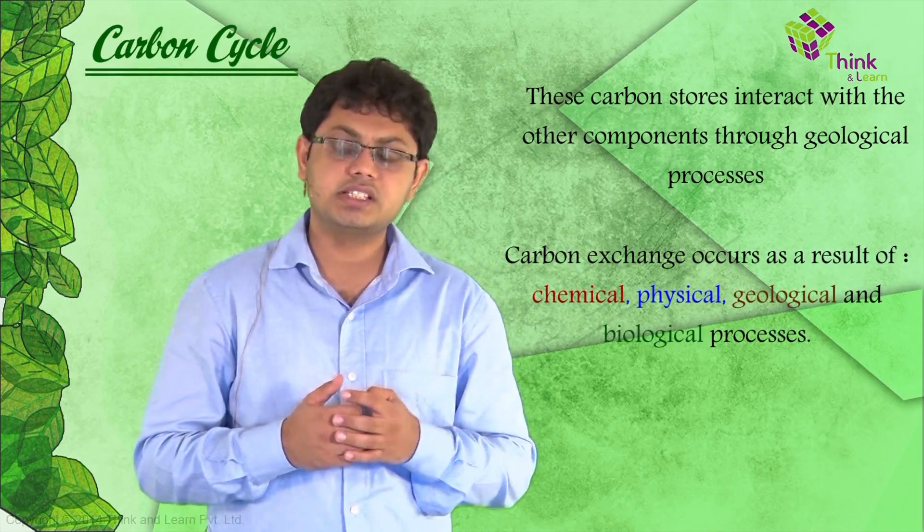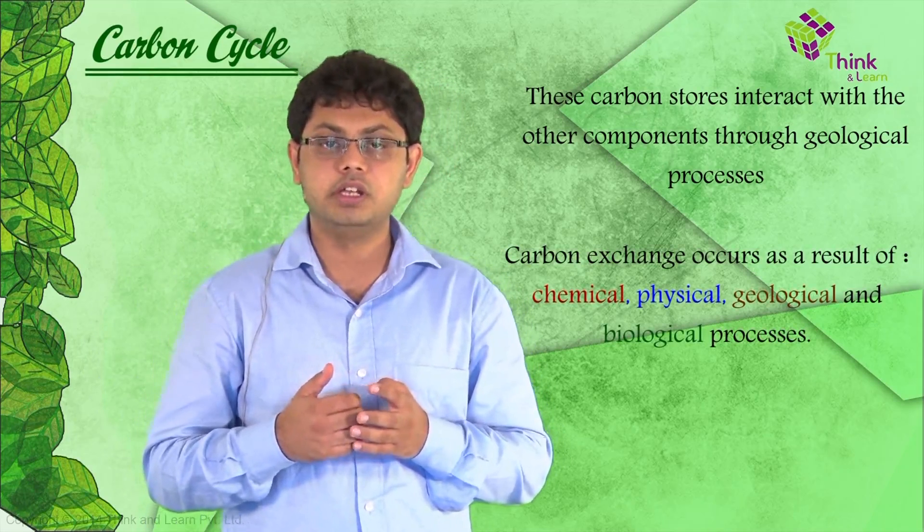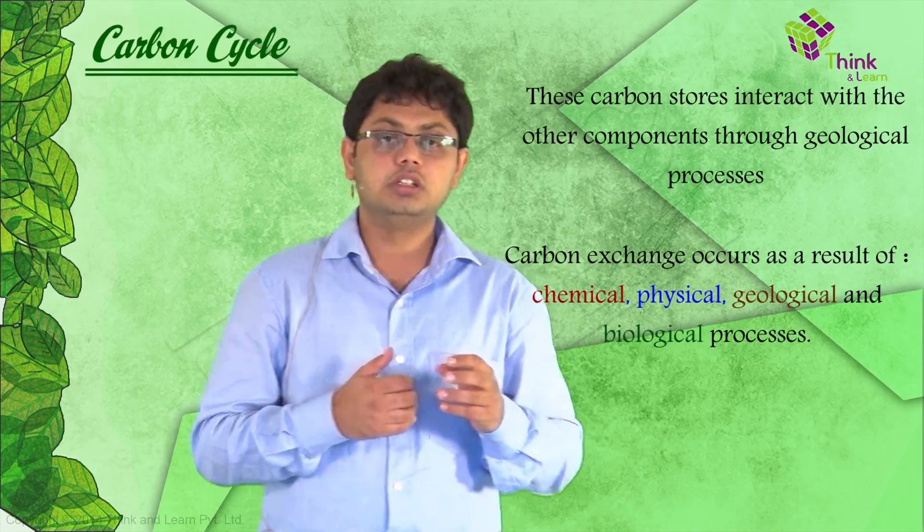The ocean contains the largest active pool of carbon near the surface of the earth. The natural flows of carbon between the atmosphere, ocean, and sediments are fairly balanced, so that carbon levels would be roughly stable without much human influence. As discussed, the carbon cycle has two components: the fast component, where recycling happens really fast, and the slow component.